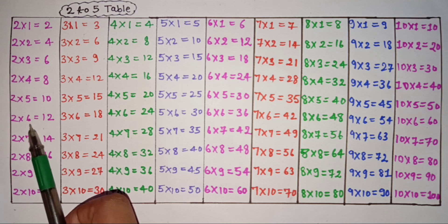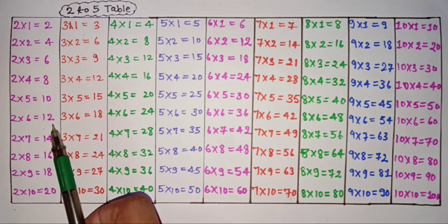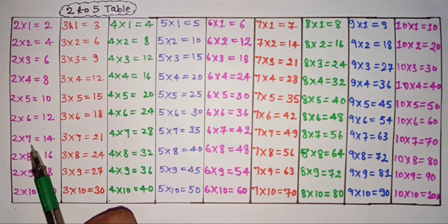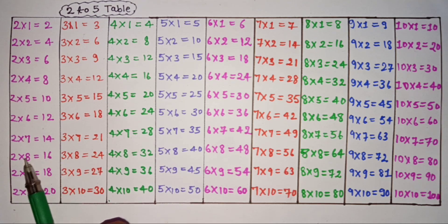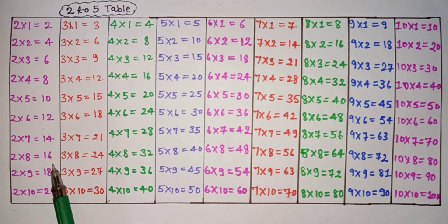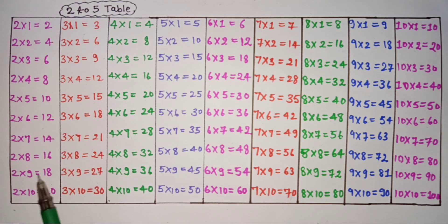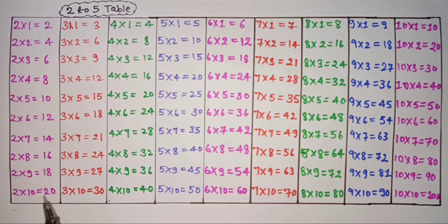2 6's are 12, 2 7's are 14, 2 8's are 16, 2 9's are 18, 2 10's are 20.